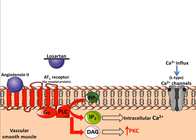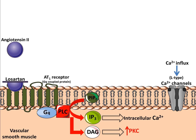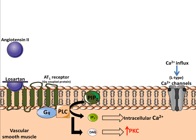Losartan competitively inhibits the angiotensin 2 receptor type 1 on the vascular smooth muscle membrane, which inactivates the G protein on this membrane. Consequently, this will reduce the production of IP3 and DAG, leading to a decrease in intracellular calcium levels and the inactivation of phosphokinase C enzyme activity.